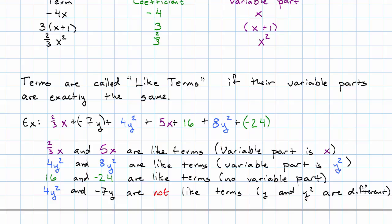On the other hand, 4y squared and negative 7y, those are not like terms. Why not? Because y and y squared are different from each other.